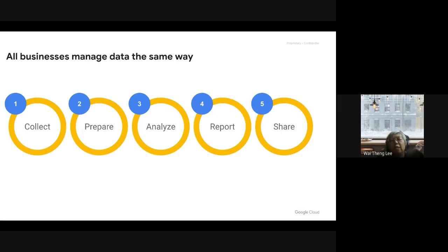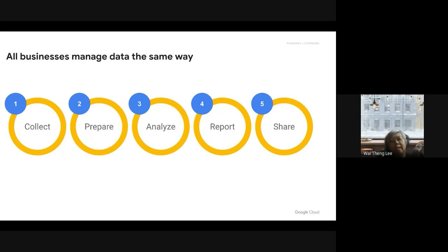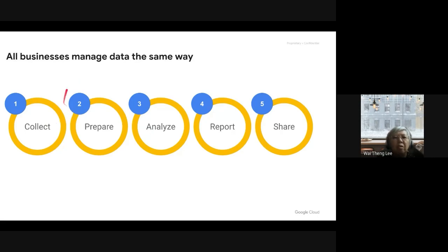The fourth step is reporting. We need to decide what kind of report. And finally, sharing the data. I'm going to show you what problems we encounter in each step. I've already shared some of the problems, but I will emphasize them.